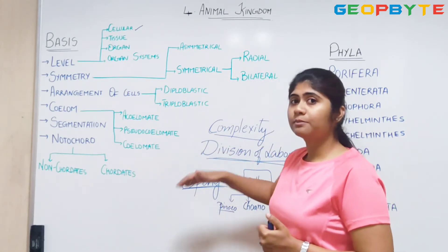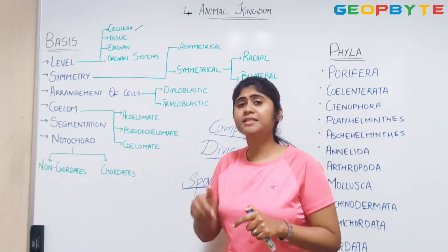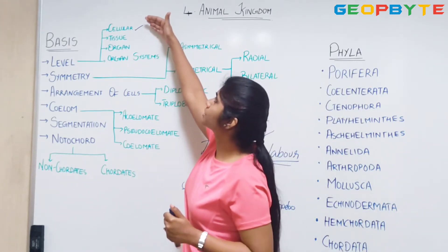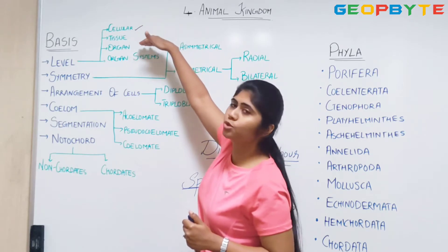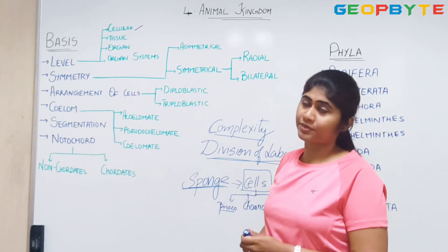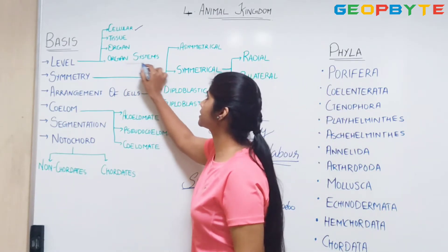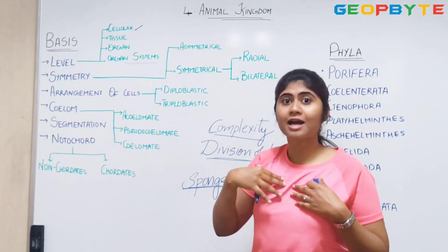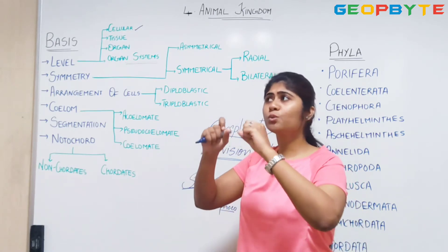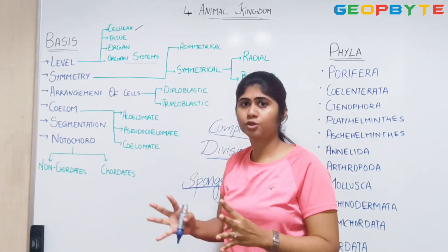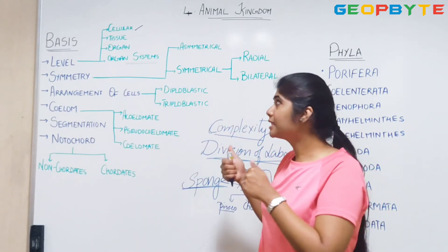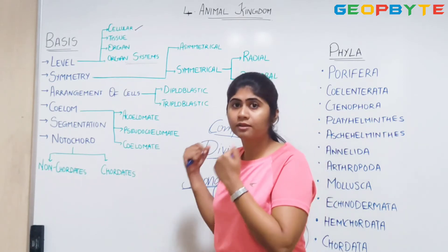When I say division of labor is there at the cellular level, it is there but it is minimum when compared to the other types. As we proceed from cellular organization to tissue organization to organ and then organ system, the division of labor keeps on increasing. In case of organ systems — we human beings have organ systems like the excretory system, digestive system, reproductive system — we have systems to perform a particular function, and this is the highest form of division of labor, making work very efficient.